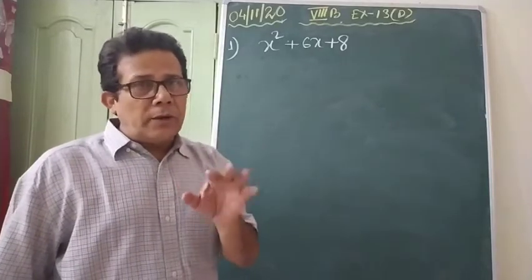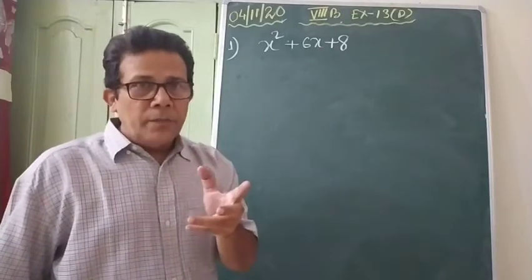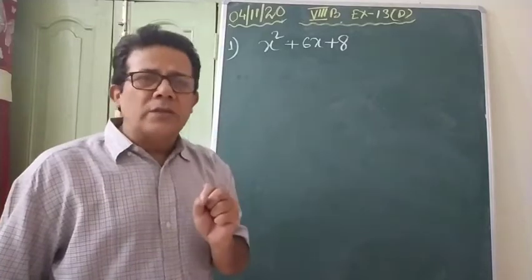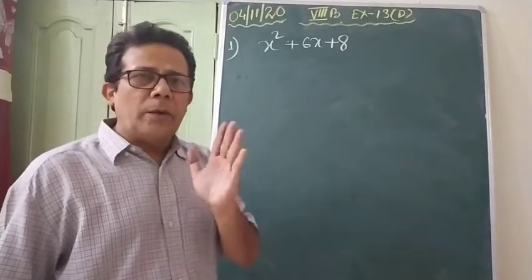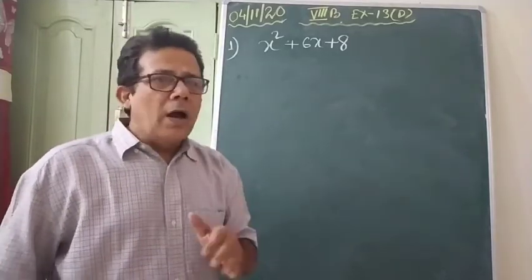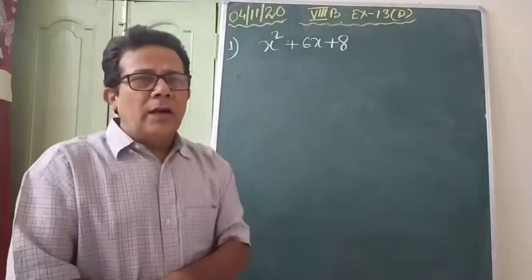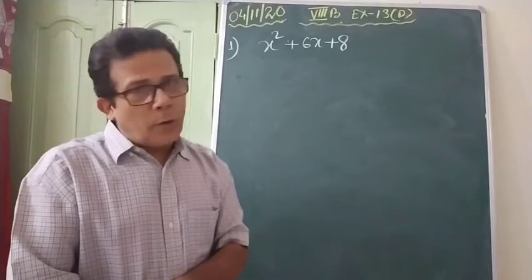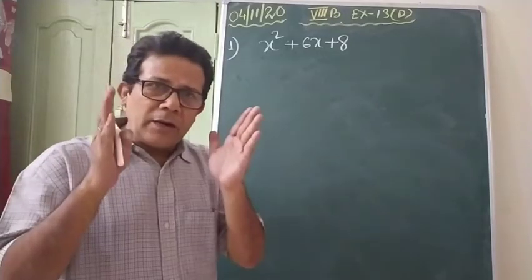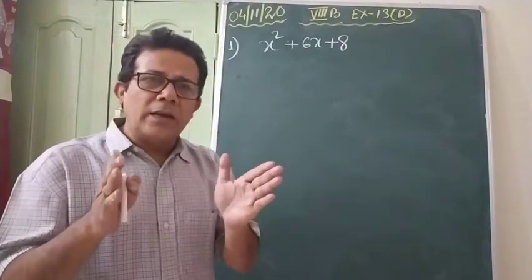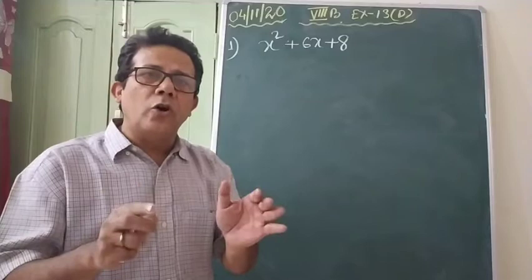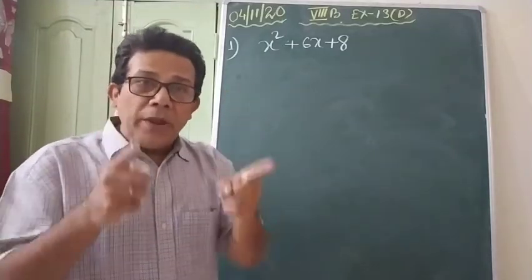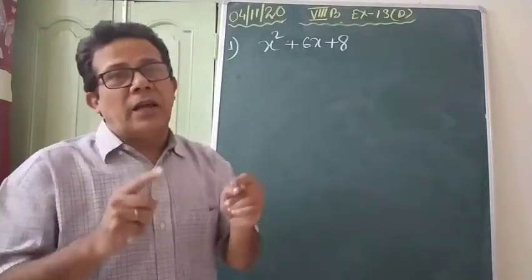Because for this factorization, first you have to break it, then you have to group them, then you take the common. So, one by one I will explain you. Basically, these factorizations are called middle term breaking factorization.